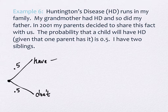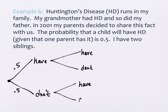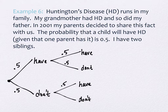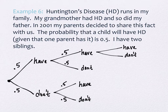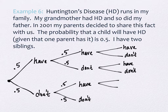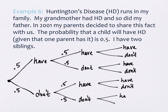My sister is 17 months younger than I am, so she's branch number two — she either has it or she doesn't: 'have' and 'don't,' again a 50/50 shot, so 0.5. My brother is the third child, and again he either has it or he doesn't — 'have' and 'don't' — and they're all 0.5.